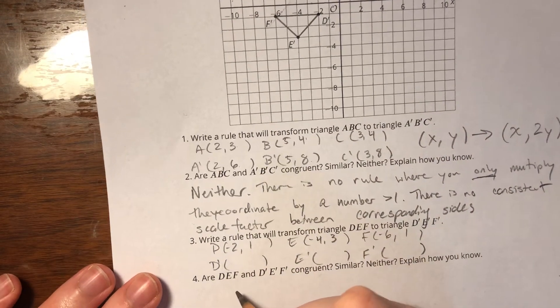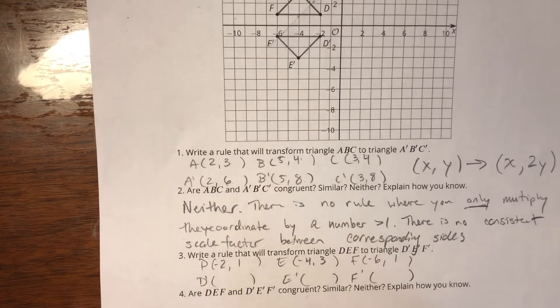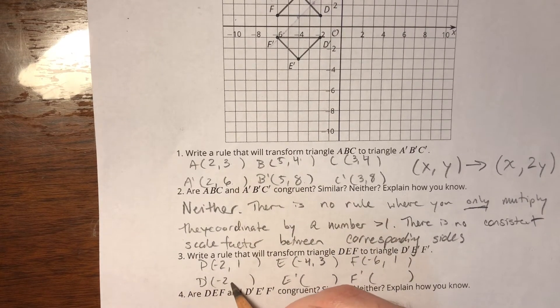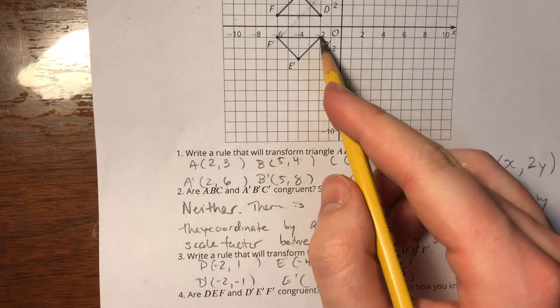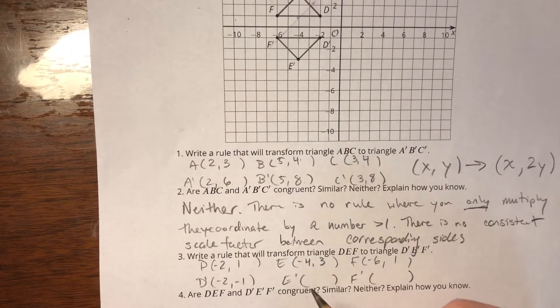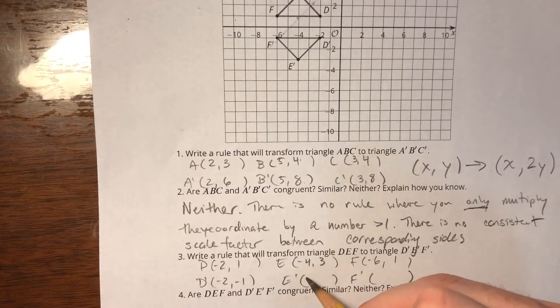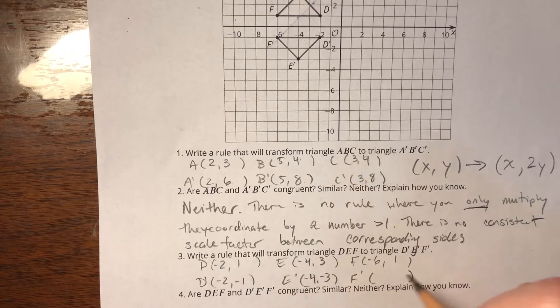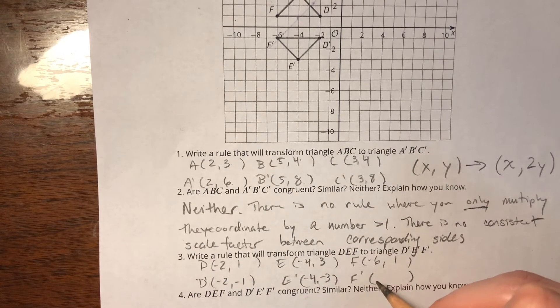D prime is at negative 2, 1. I'm sorry, negative 2, negative 1. That's a negative y coordinate. E prime is at (-4,-3). And F prime is at (-6,-1).